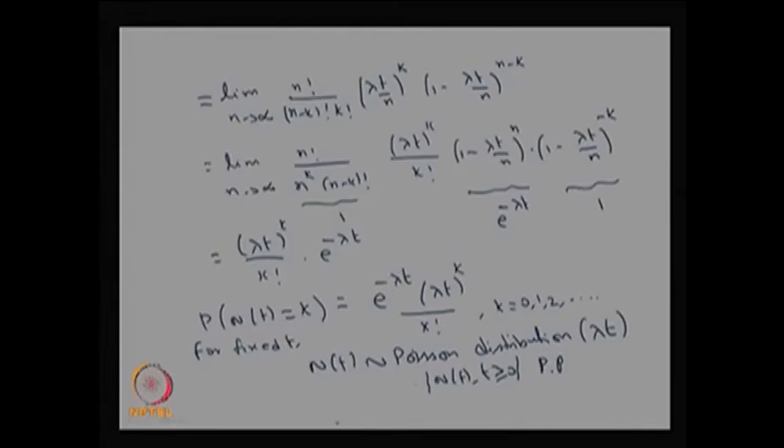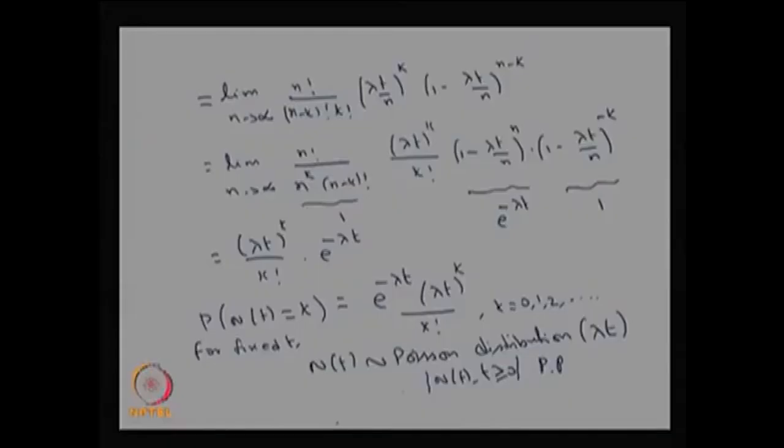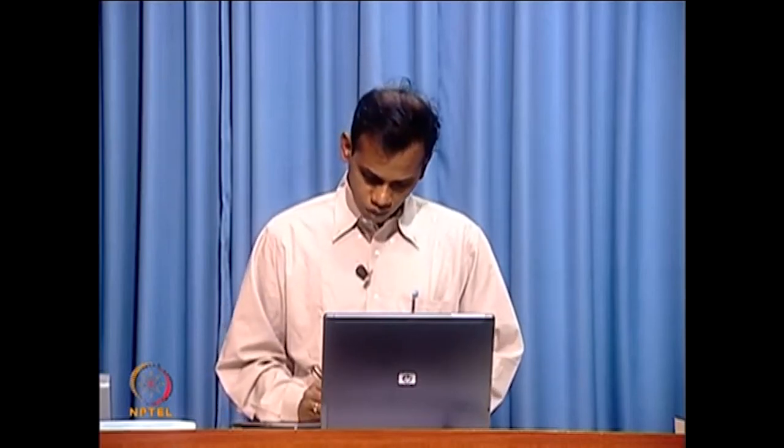This is a very important continuous-time, discrete-state stochastic process — that is, the Poisson process. It is also a very important continuous-time arrival process. The way we count N(t) is as the number of arrivals over the interval 0 to t, or the number of occurrences of an event over time. The Poisson process is an example of a counting process, and N(t) is also called a counting process.